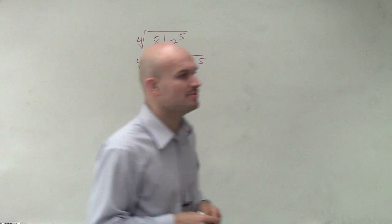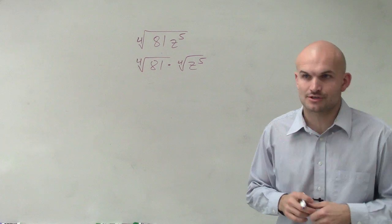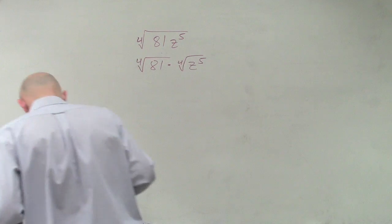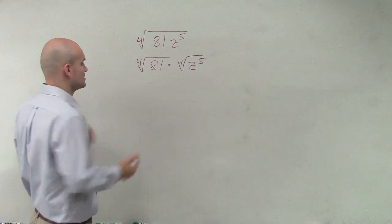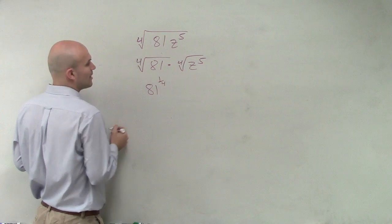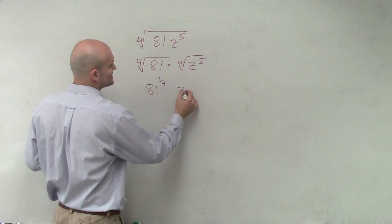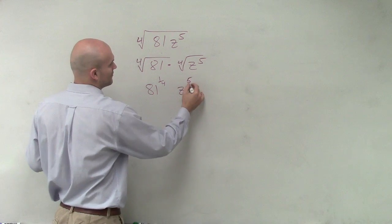Then it says to simplify by writing it with rational exponents. So now what I'm going to want to do is rewrite these with rational exponents rather than the radicals. So I'll write 81 to the 1 fourth power, and this is going to be z to the 5 over 4 power.